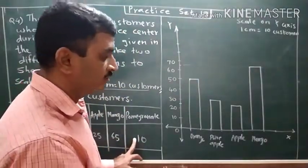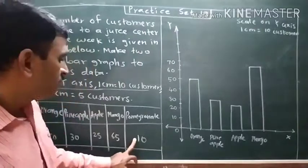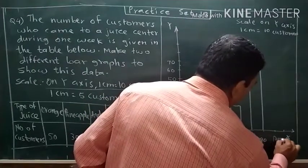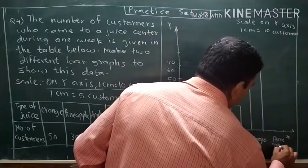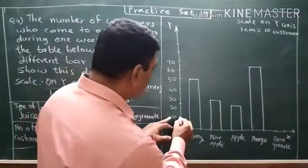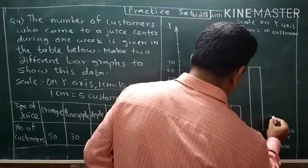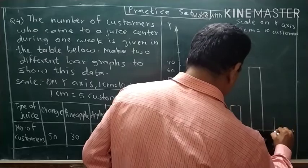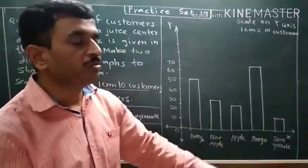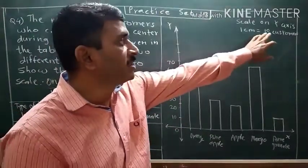Last one is pomegranate. For pomegranate juice, ten customers are there. We only have to show ten customers, so ten is over here. We will mark over here as ten and draw the bar. So this is for the pomegranate. Now you can see this is a bar graph with the scale: one centimeter is equal to ten customers.